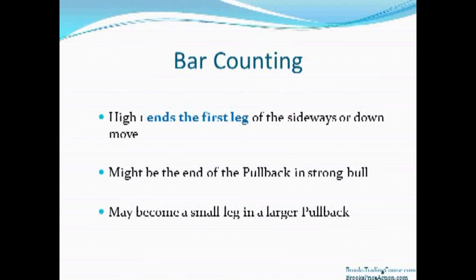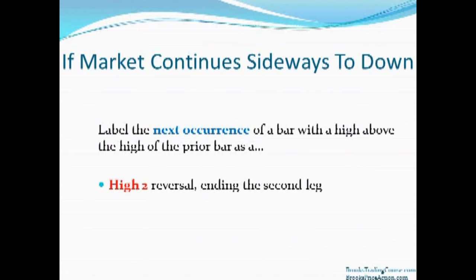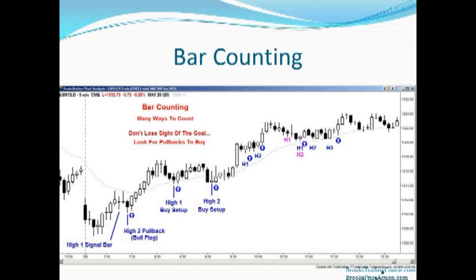The high one ends the first leg of the sideways to down move, and it might be the end of the pullback. In a strong bull trend, it may be the first leg down in a larger pullback — for example, in a triangle or a wedge bull flag. If the market continues sideways to down after the high one triggers, the next occurrence of a bar going above the high of the prior bar is a high two reversal.